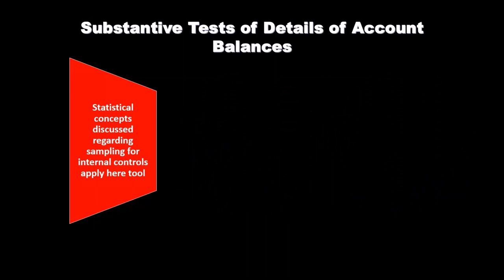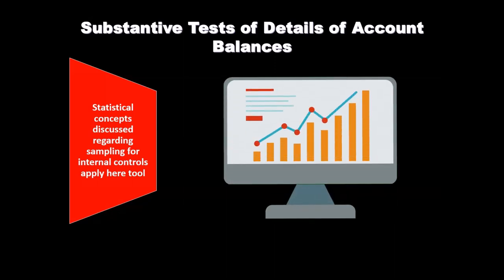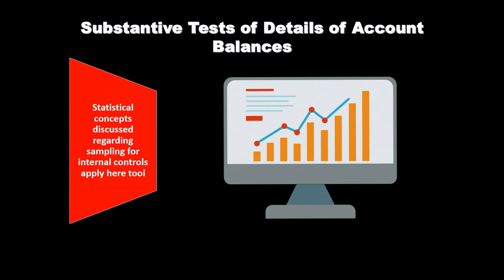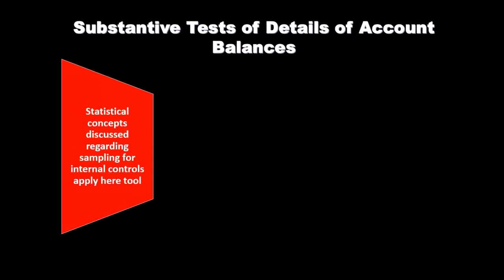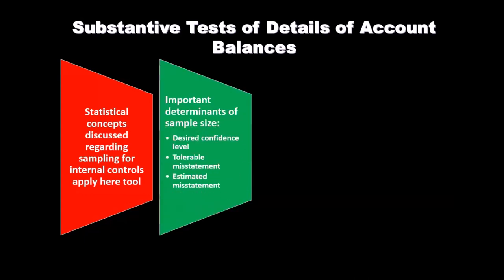Substantive testing is the bulk of the testing we typically think of within the audit. You could think of it as the type of testing where we're actually digging down into — give me that balance sheet, let's go straight through the trial balance: cash, accounts receivable, property, plant, and equipment — start digging into those items, testing those actual transactions related to them. This is where the bulk of the work typically will be.